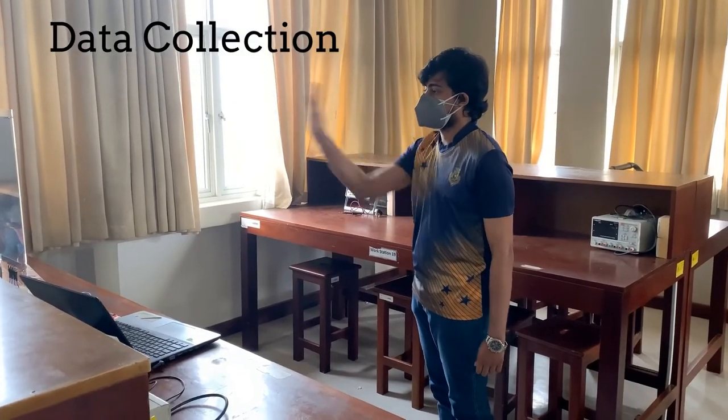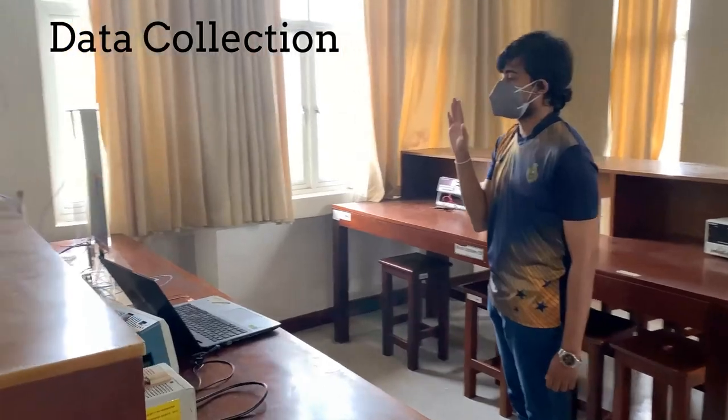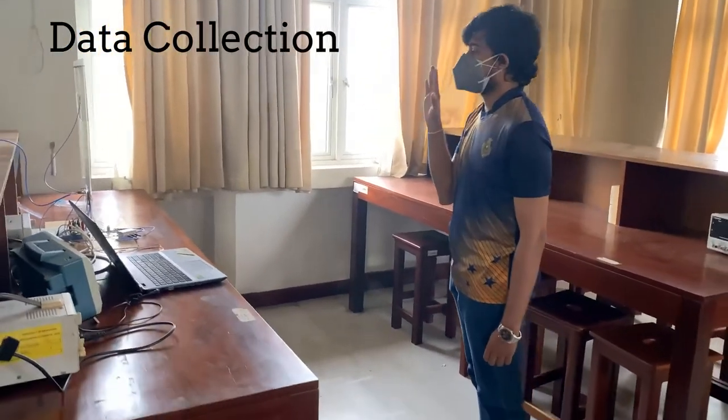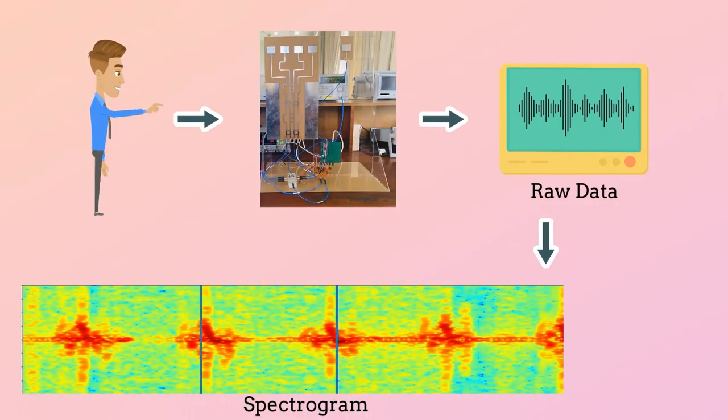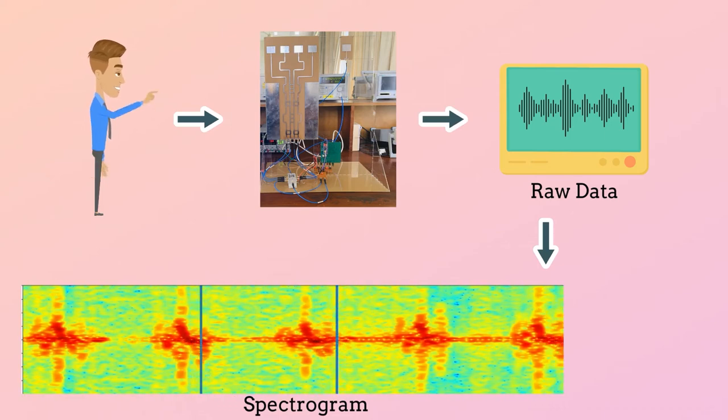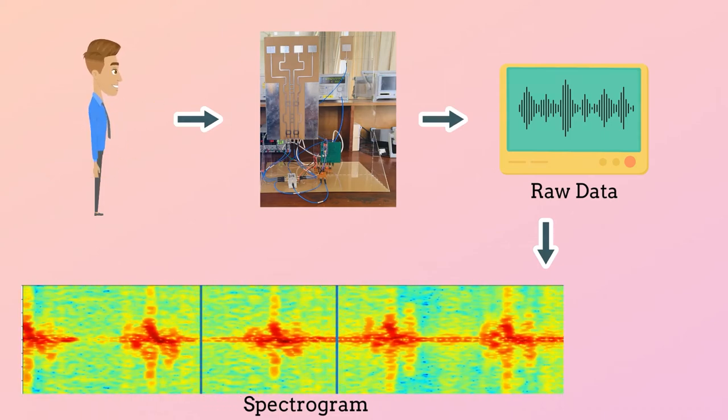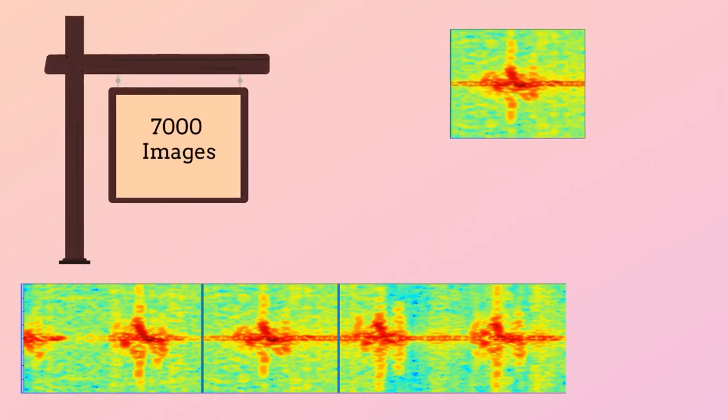We have collected data on six types of hand gestures using our setup. Spectrograms corresponding to each gesture are obtained by applying short time Fourier transform on the raw data. We prepared a dataset with 7000 spectrograms for the gesture classes.